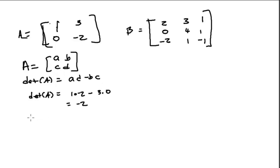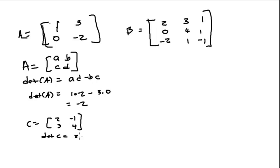If I had the matrix [2, 3, -1, 4], the determinant of C would be 2 times 4 minus negative 1 times 3, or 8 plus 3, or 11.